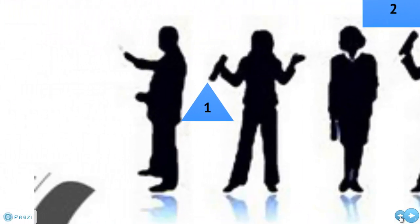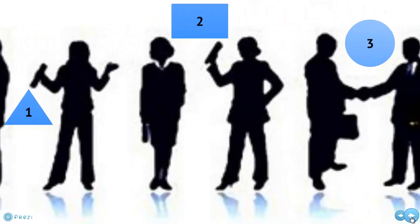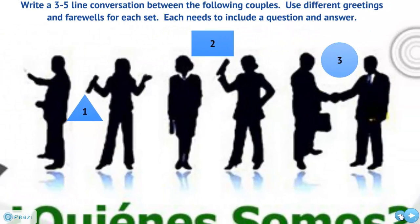Also write down three ways of addressing someone. Señor means mister. Señorita means miss — an unmarried lady. And señora is used for someone who is married or older. So remember: write a three to five line dialogue for each of the three couples, including a question and answer, and different greetings and farewells.